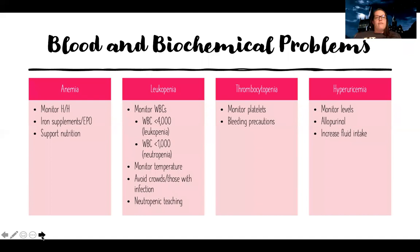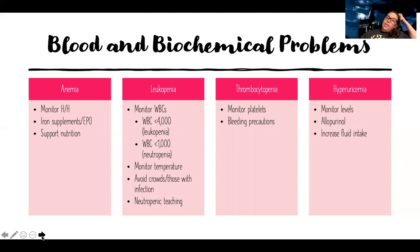We also have blood and biochemical problems. The three top side effects — what we call blood dyscrasias — are anemia, leukopenia, and thrombocytopenia: low red blood cells, low white blood cells (which leads to what we call neutropenia), and low platelets. For anemia, I want to monitor hemoglobin and hematocrit, possibly give iron supplements or erythropoietin, and support their nutrition since nutritional deficiencies can add to that anemia.